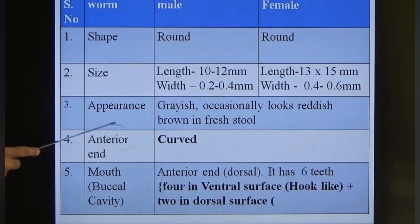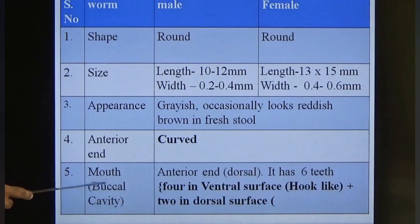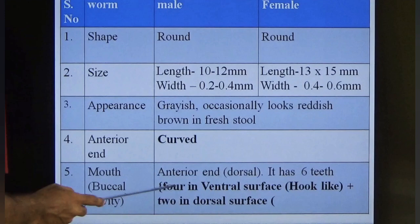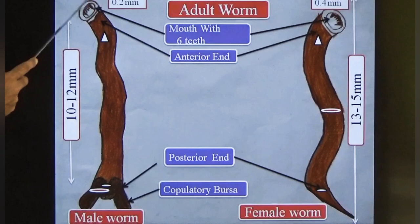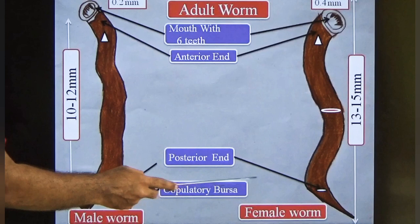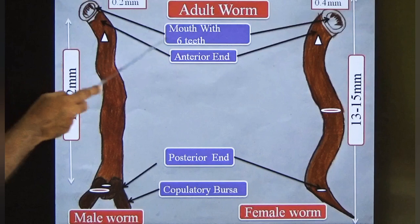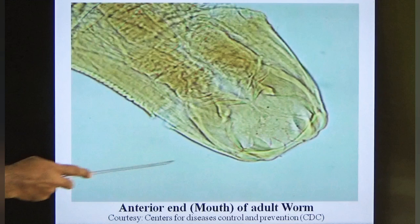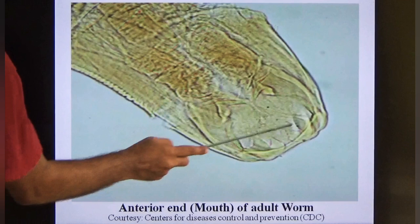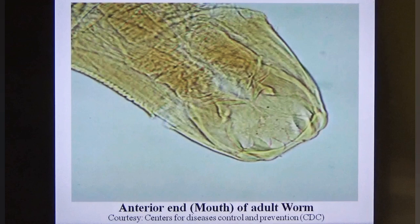The worm has two ends: anterior and posterior. The anterior end is curved and has a buccal cavity (mouth) with six teeth — four on the ventral surface (hook-like appearance) and two on the dorsal surface. You can count all six teeth visible in the slide.